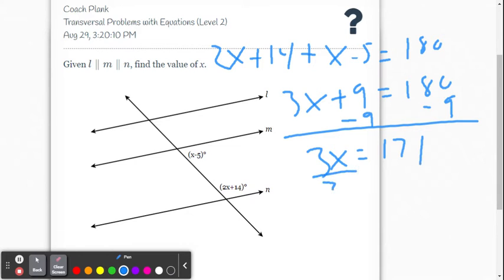So we get 3x equals 171. And now we're going to divide both sides by 3. So we're going to get x equals, is that 57, I believe? 57.